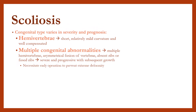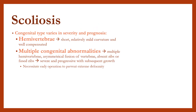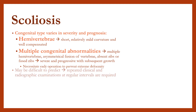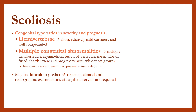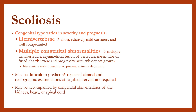Scoliosis: the congenital type varies in severity and prognosis. Hemivertebrae produce a short, relatively mild, well-compensated curvature. For multiple congenital abnormalities — multiple hemivertebrae, asymmetrical fusion of the vertebrae, and absent or fused ribs — the curvature is severe and progressive with growth. Scoliosis may be difficult to predict; therefore, repeated clinical and radiographic examinations at regular intervals are required. It may also be accompanied by congenital abnormalities of the kidney, heart, or spinal cord.